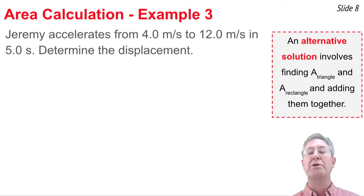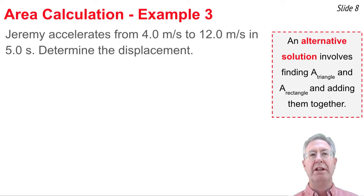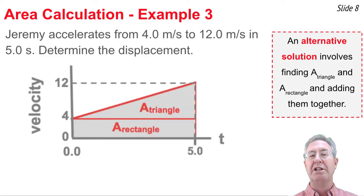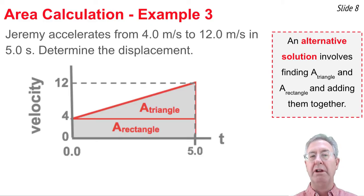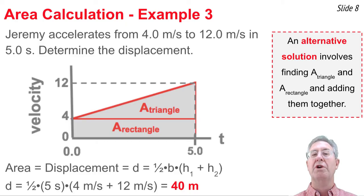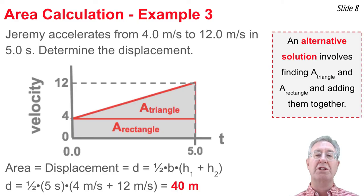Our final example is the most difficult — an accelerated motion not starting from rest. Jeremy accelerates from 4 meters per second to 12.0 meters per second in 5 seconds. The velocity-time graph starts at 4, not 0, and rises to 12 at 5 seconds. The area is trapezoidal, so displacement equals one-half times the base of 5 seconds times the quantity 4 m/s plus 12 m/s. That gives a displacement of 40 meters.